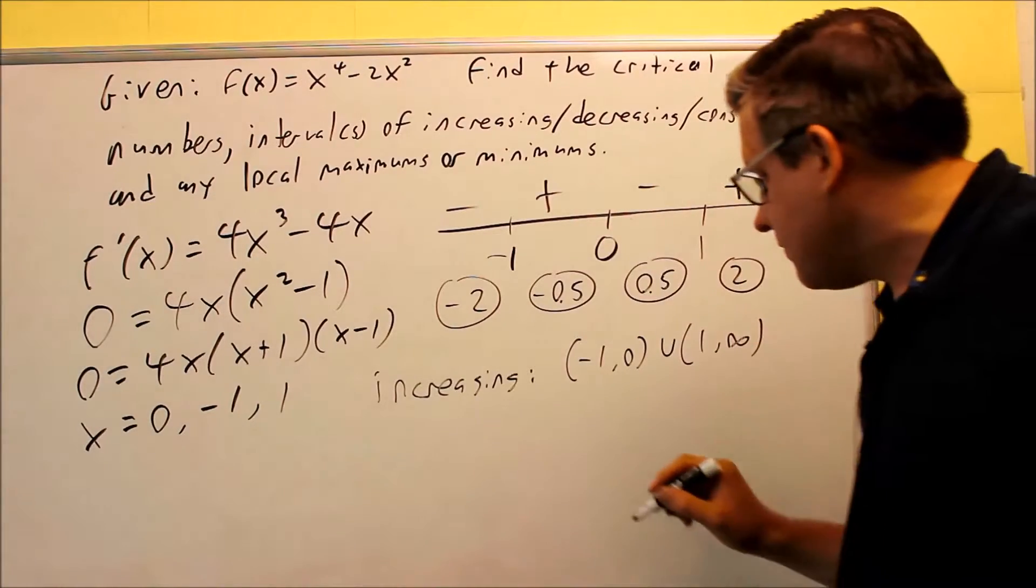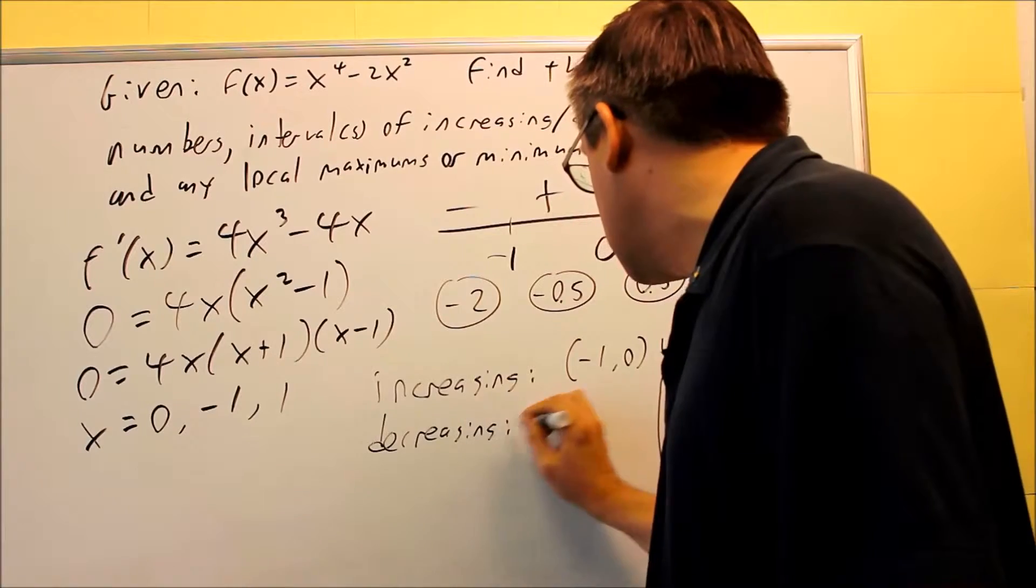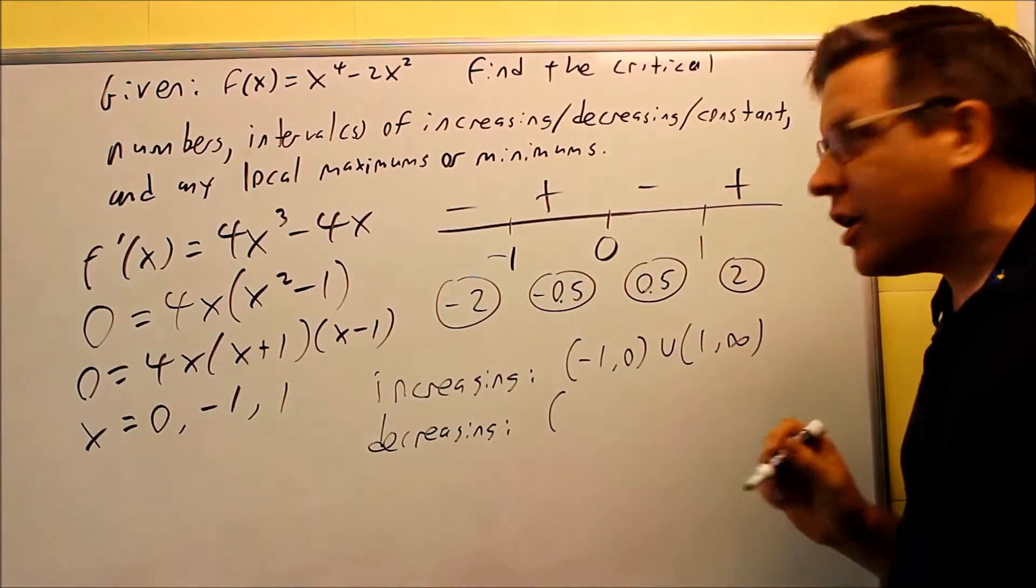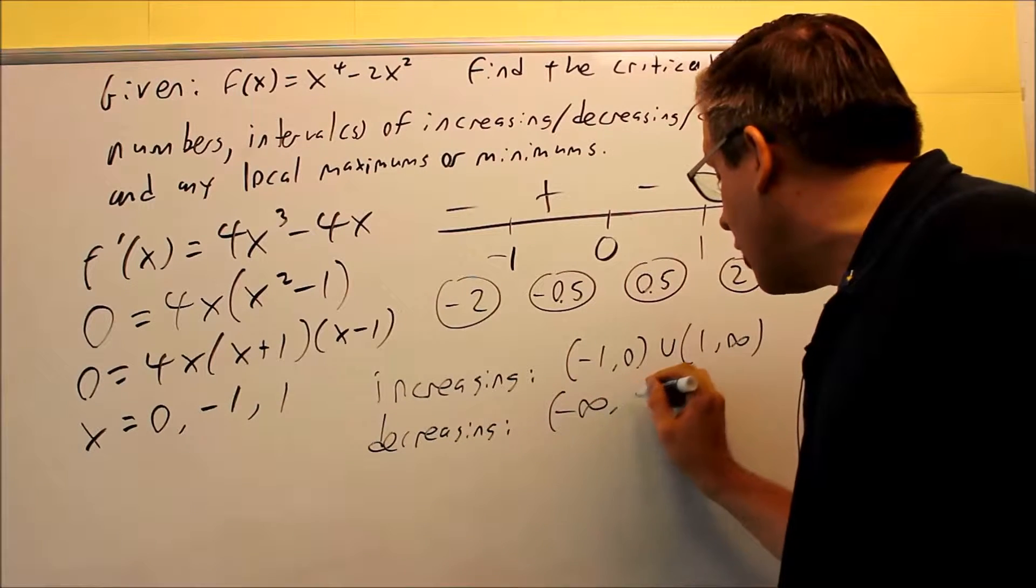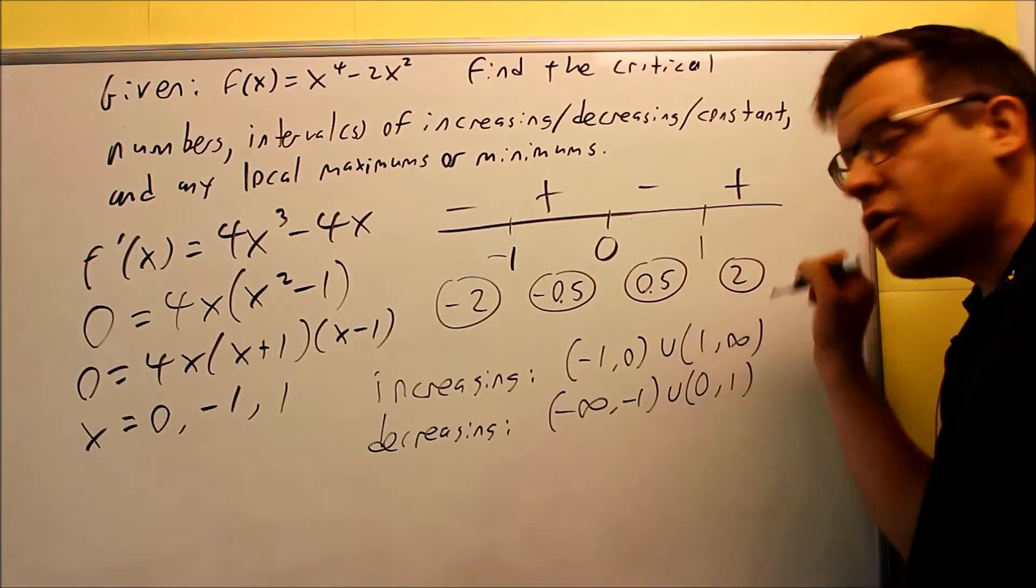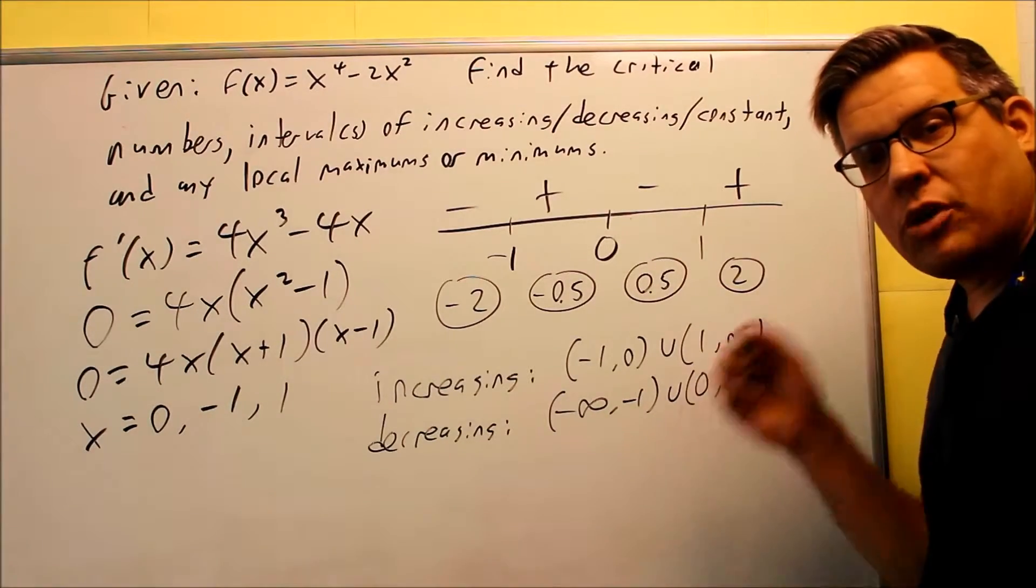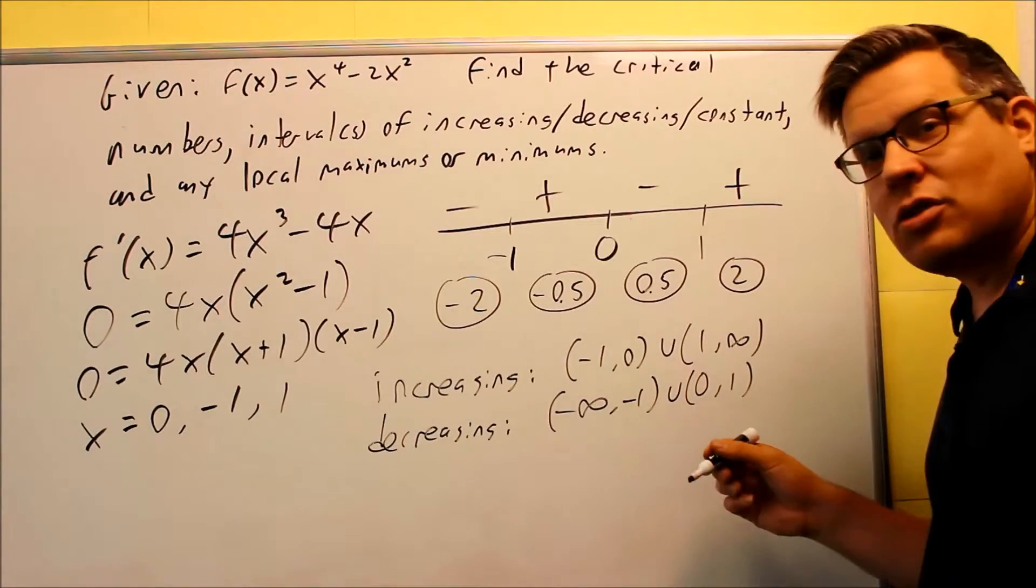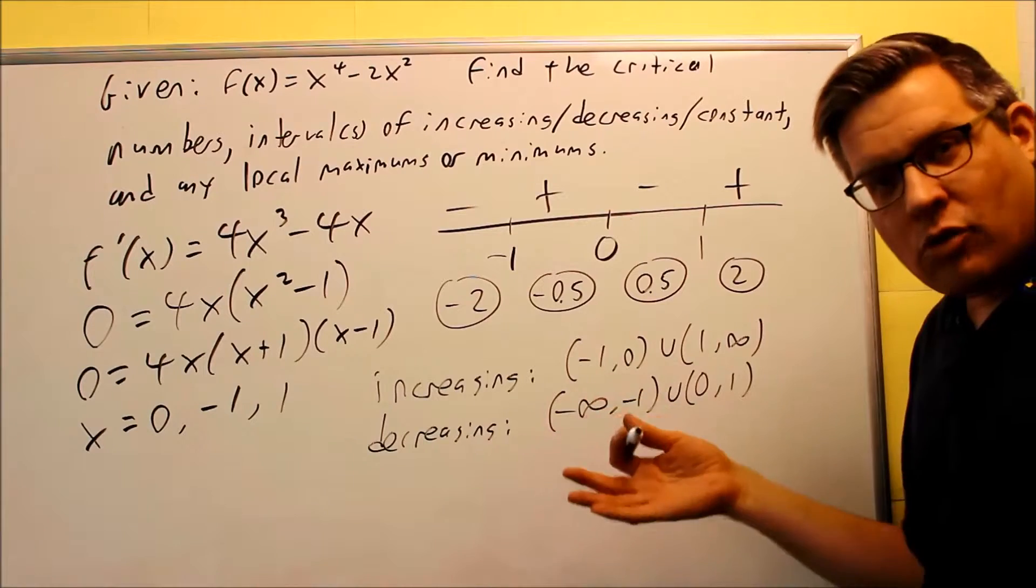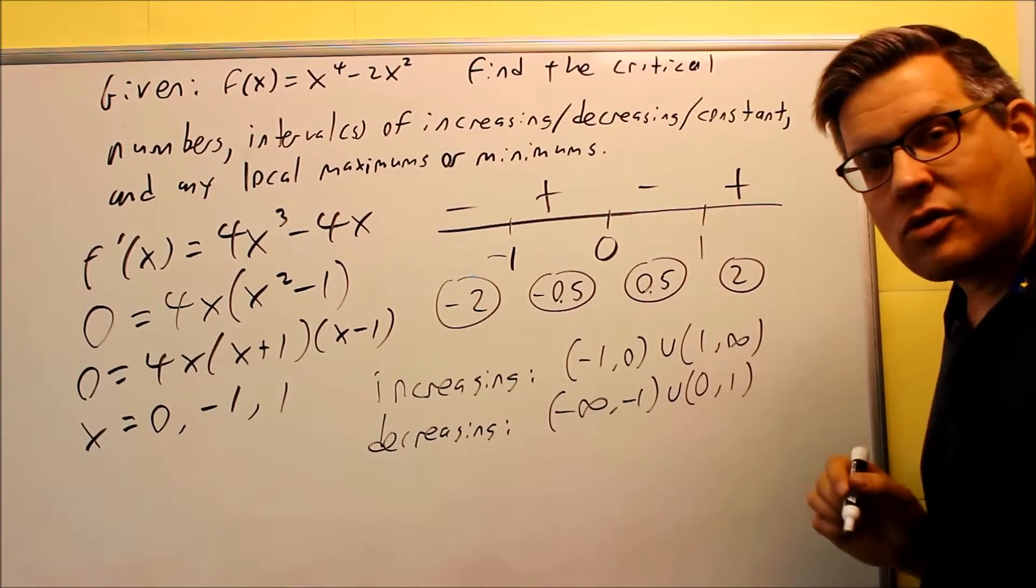Now the ones that are negative, that's going to be our decreasing. Okay, so decreasing will be any place I have a minus sign on my interval. Negative infinity to negative 1, and then in between here, between 0 and 1, and again I'm using my parentheses. Now these are exactly the same answers we got from the graph itself. We pulled the information this time directly from algebra. We didn't have to use any graph at all to get the same results, and this is how you can use calculus.